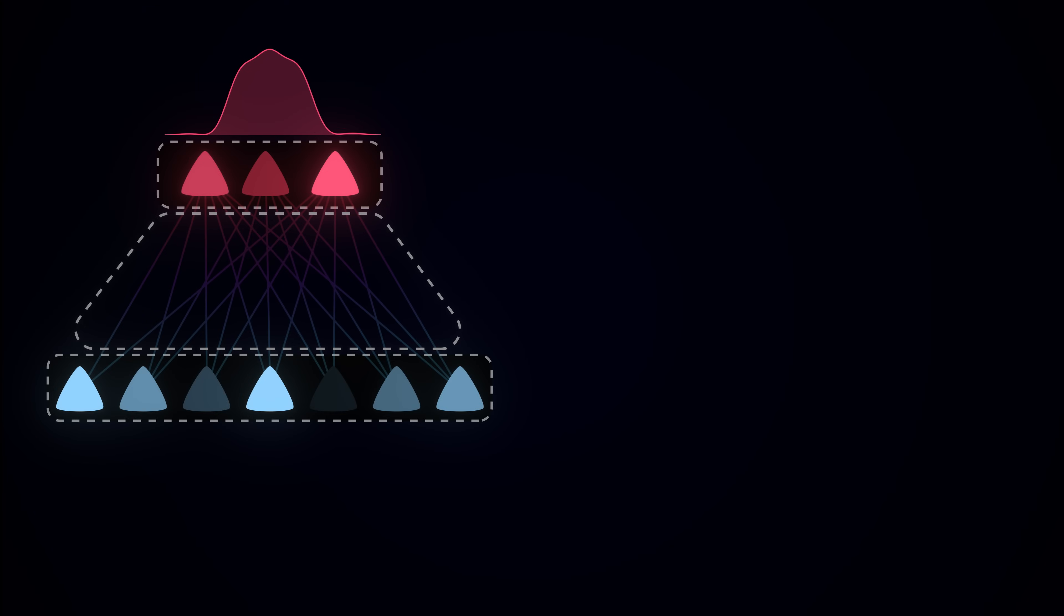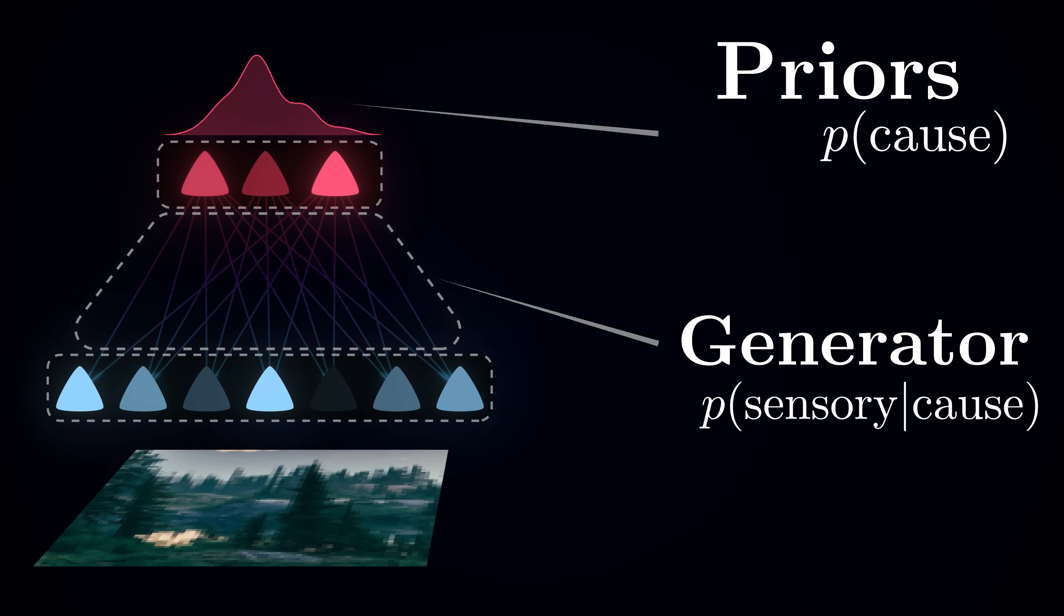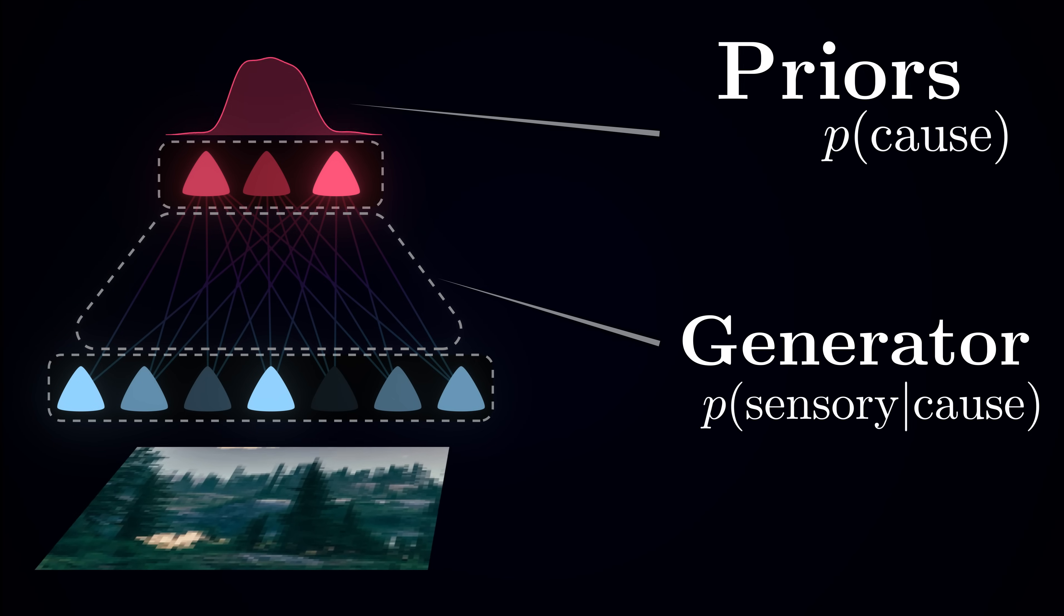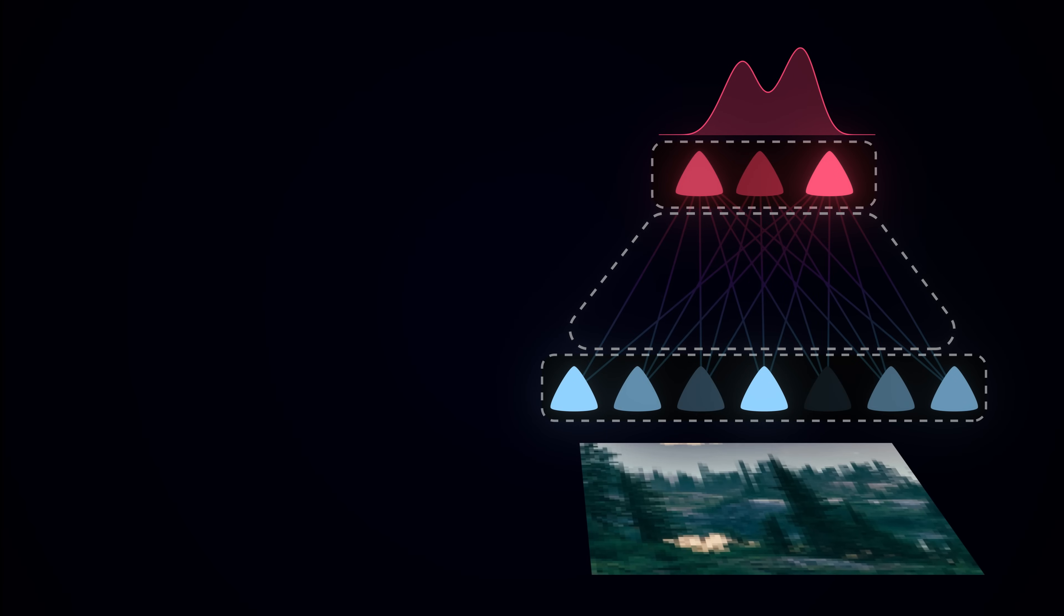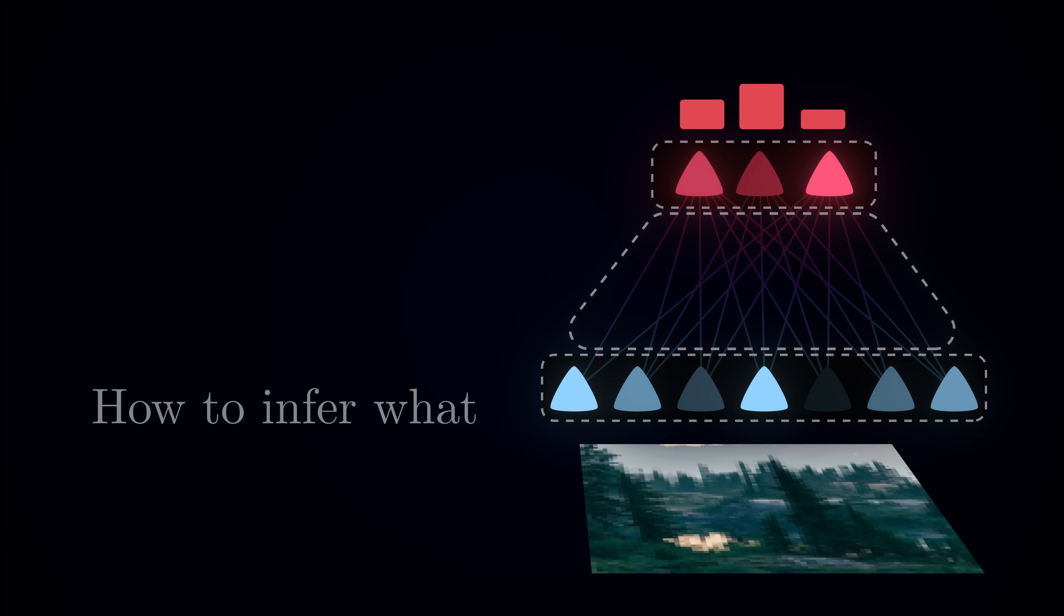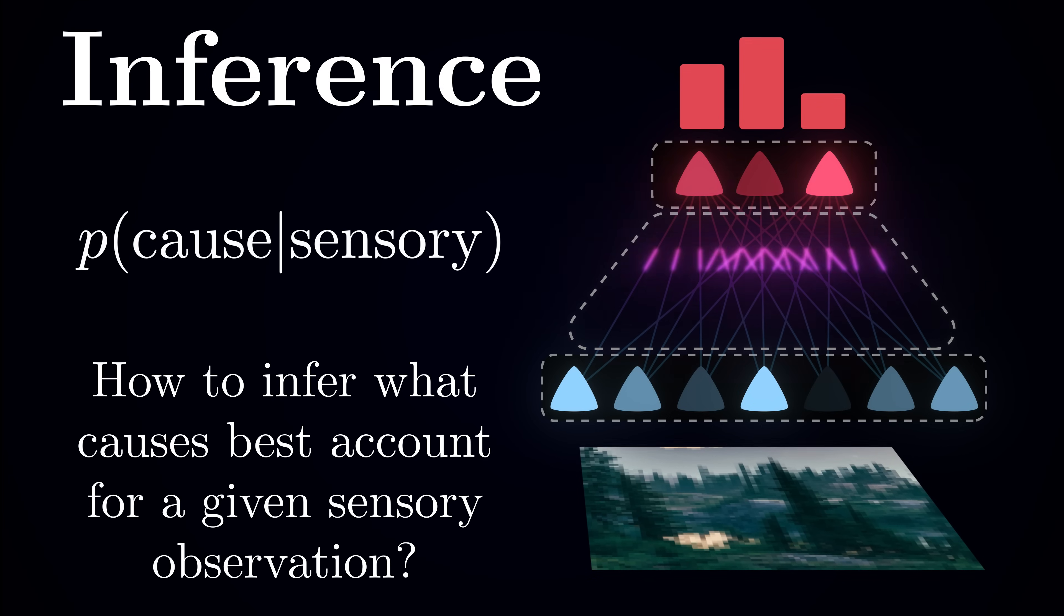Hence, the generative model the brain uses to make sense of the outside world has two components - the prior, which tells us how likely various causes are, and the generator network, which can synthesize sensory data for a given cause. In real life, however, we constantly face the opposite problem. We have sensory input and need to figure out what caused it. It is called inference, inferring causes from observations. And this is where things get a bit tricky.